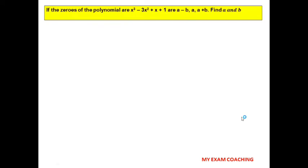The next question: if the zeros of the polynomial x³ − 3x² + x + 1 are a − b, a, and a + b, find the values of a and b. This is a cubic polynomial, so it has three roots, which are given as a − b, a, and a + b.